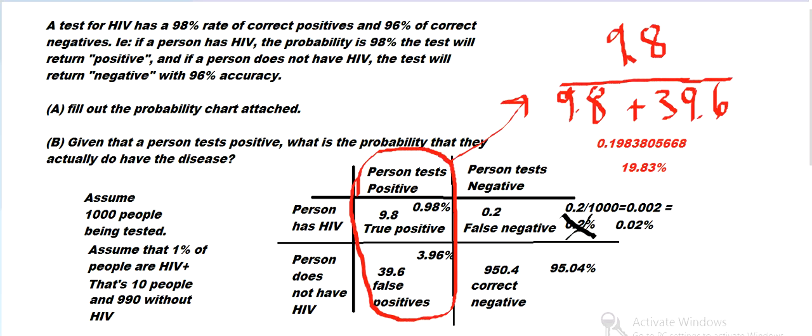So that's just under 20%. If someone tests positive, it's most likely they actually do not have the disease based on these numbers — so it's a bit counterintuitive. Hope that makes sense, and if you have any questions let me know, otherwise have a great day.